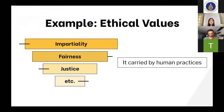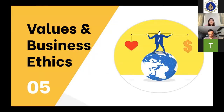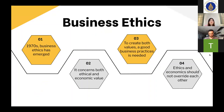All of these show that ethical values are usually carried by human practices. In the past, ethics and economics have been seen as unrelated and irrelevant. But in the 1970s, people were calling for business ethics with a desire to raise awareness about socioeconomic issues, and so business ethics emerged. Business ethics concerns both ethical and economic values at the same time in many aspects — for example, the relationship of interdependence, like between an organization and its employees. However, creating both values together at the same time is very difficult because it requires business practices done in the proper way. It is also important to know that ethics and economics should not override or be separated from each other — they should be integrated with appropriate and standardized business practices.